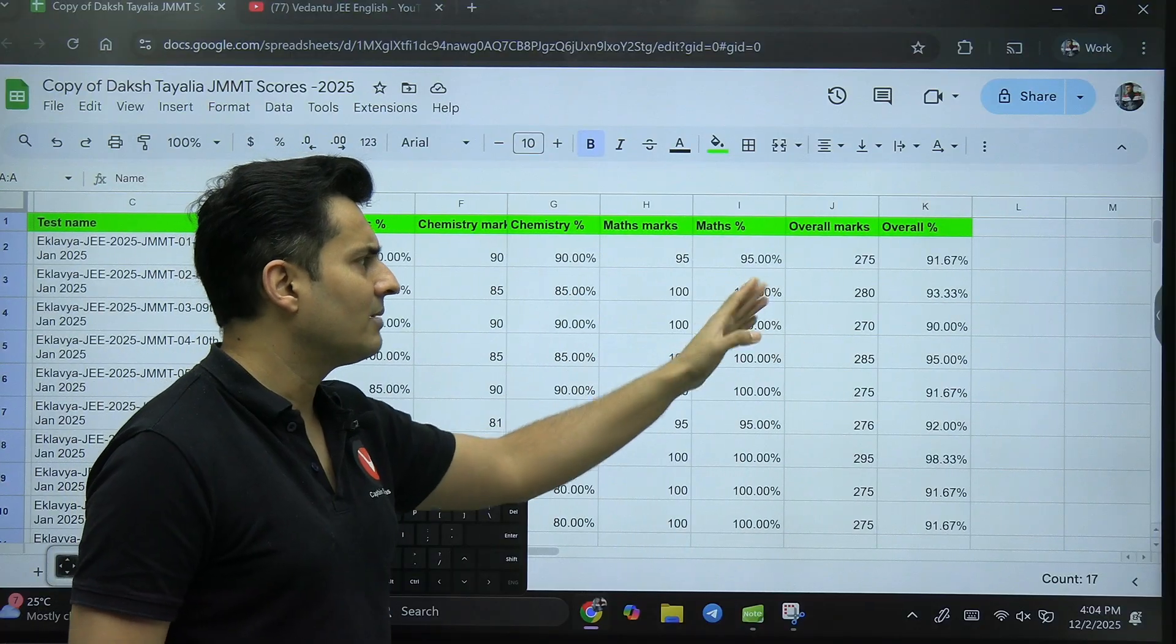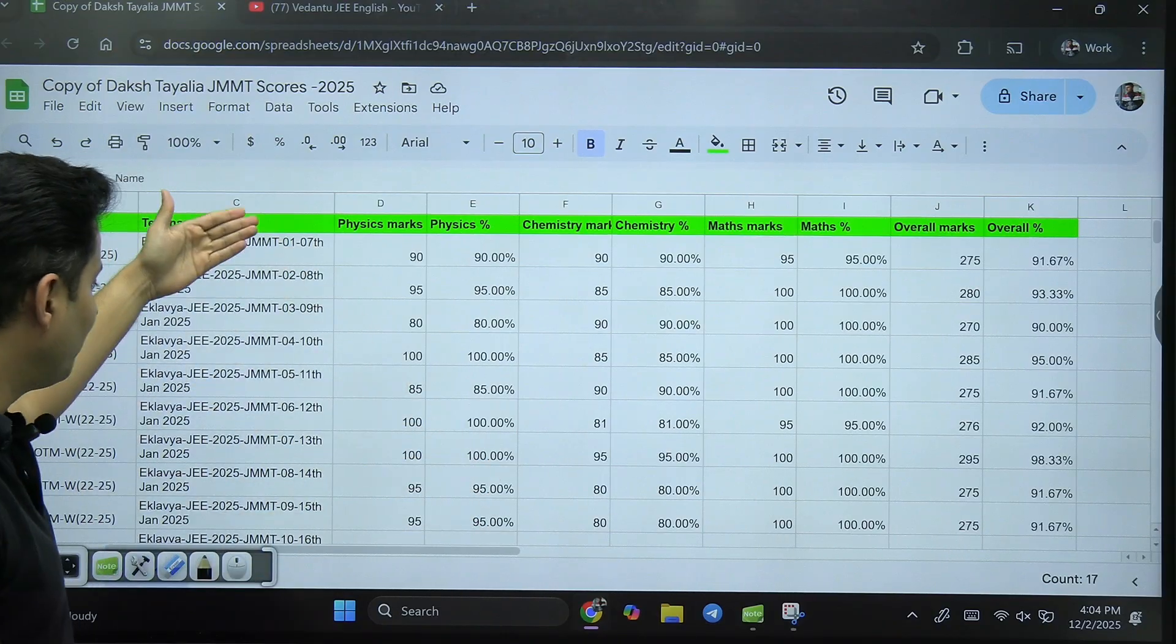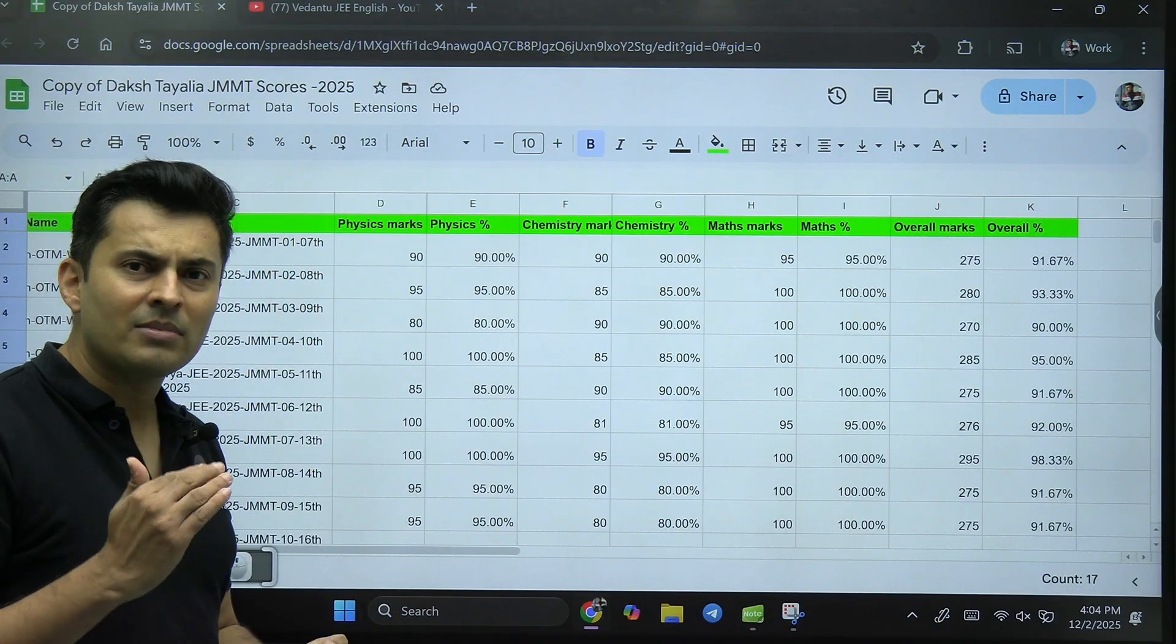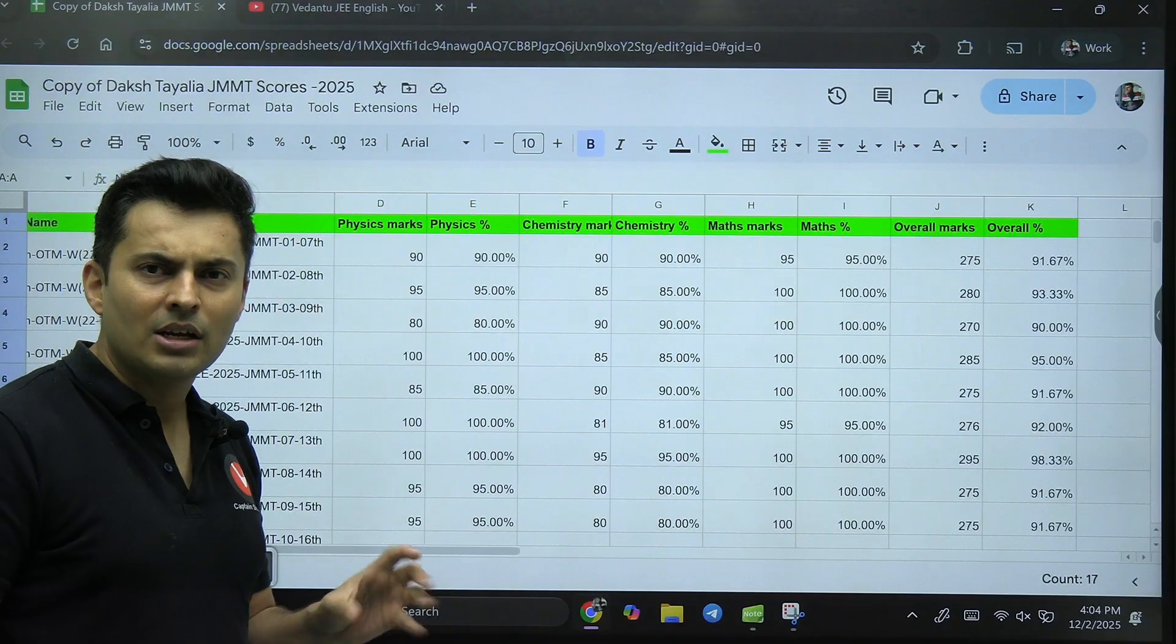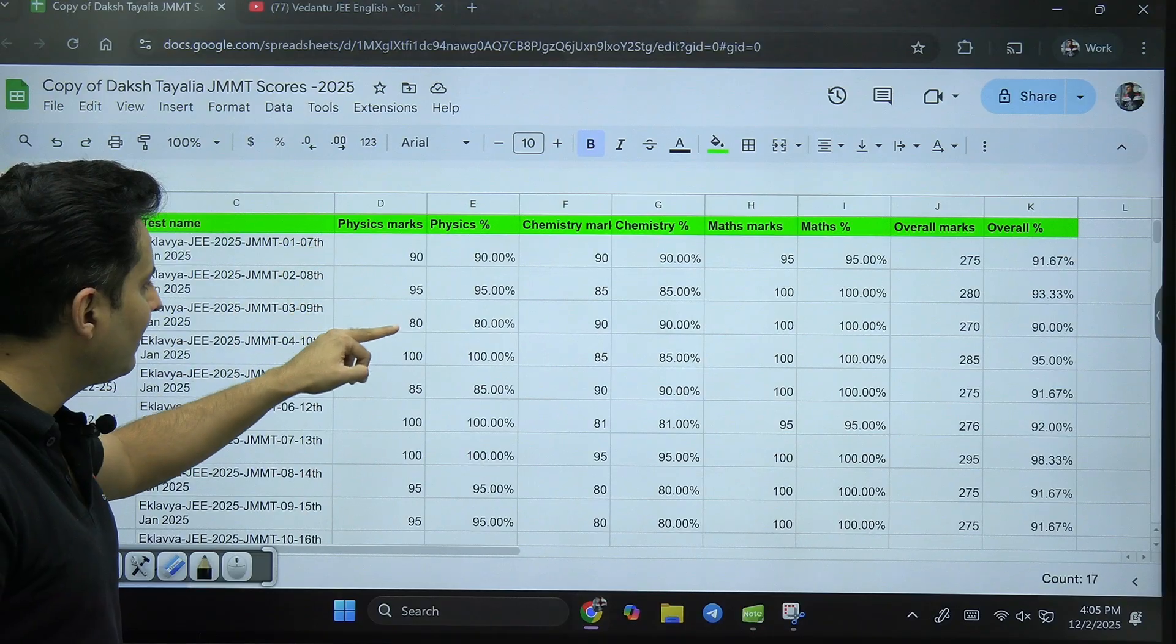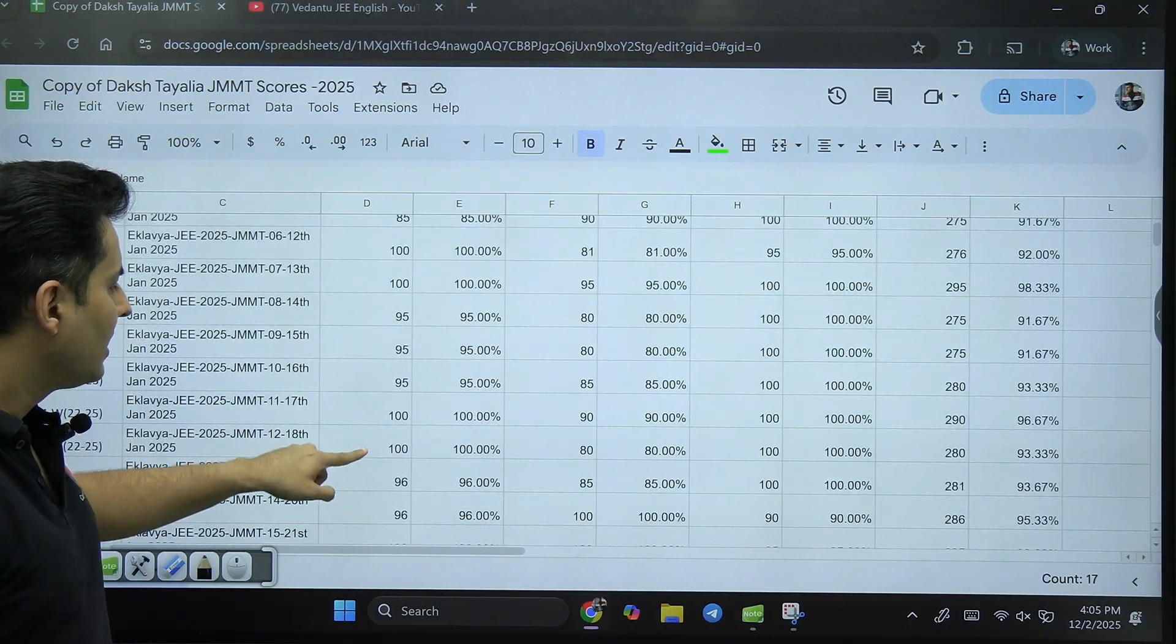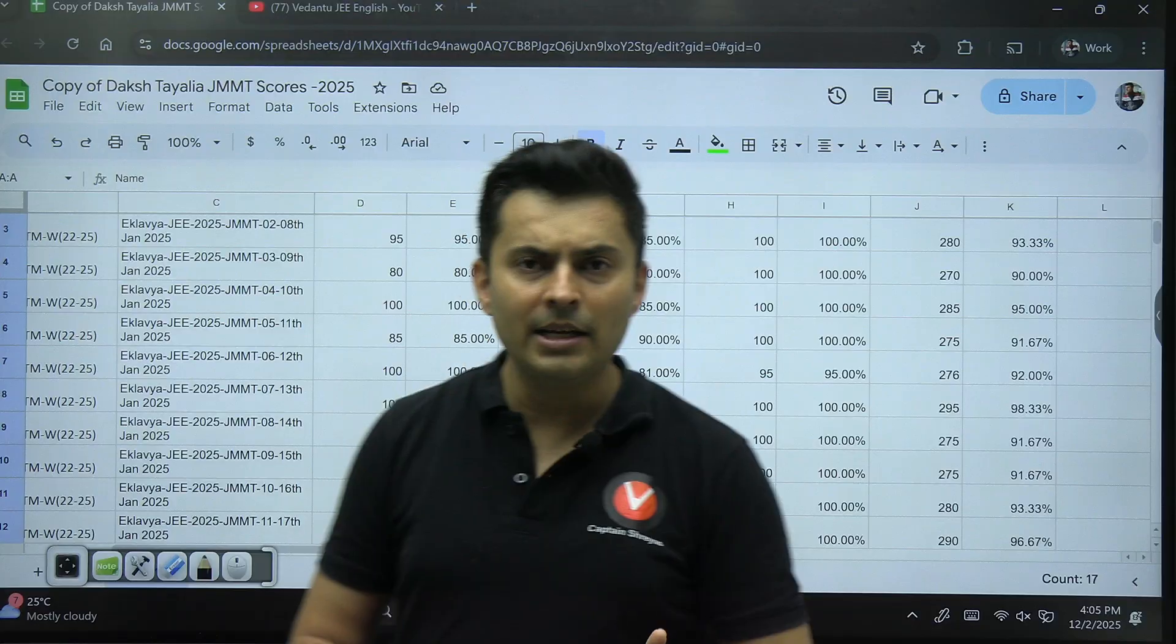These are different tests: first test, second test, third test, and these are the Physics marks, Chemistry marks, Maths marks, and percentage score. It looks very high, but remember these are the final tests just a month before the actual JEE Mains examination.